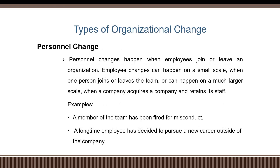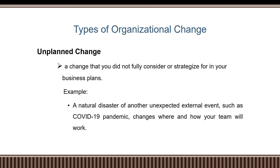The second type is personnel change. An example is when a team member has been fired or faces a misconduct issue. Personnel change happens when employees join or leave an organization. There is also unplanned change — a change you did not fully consider or strategize for in your business plan. An example is the COVID-19 pandemic, where there were changes in where and how your team works together.